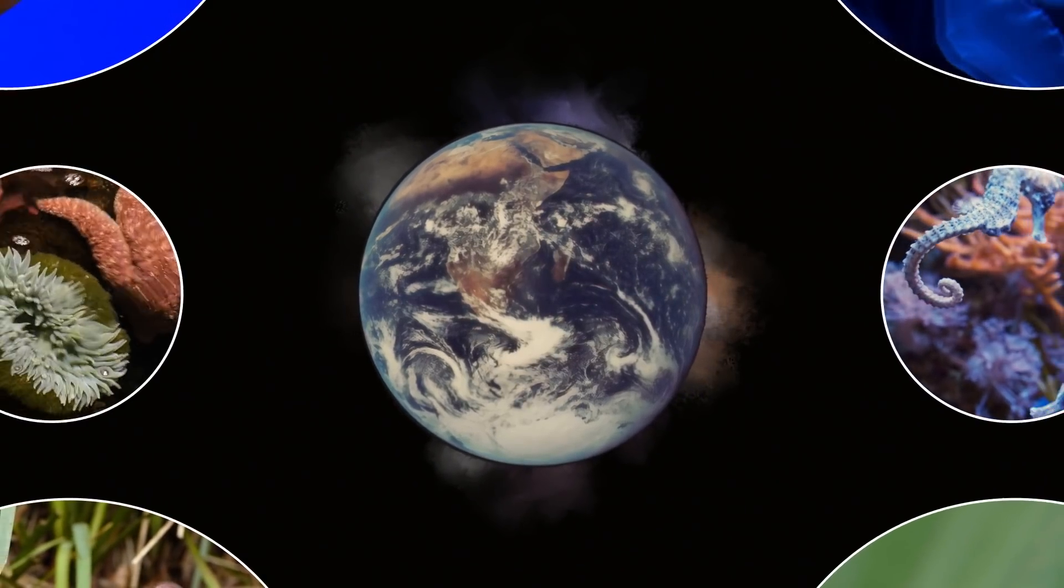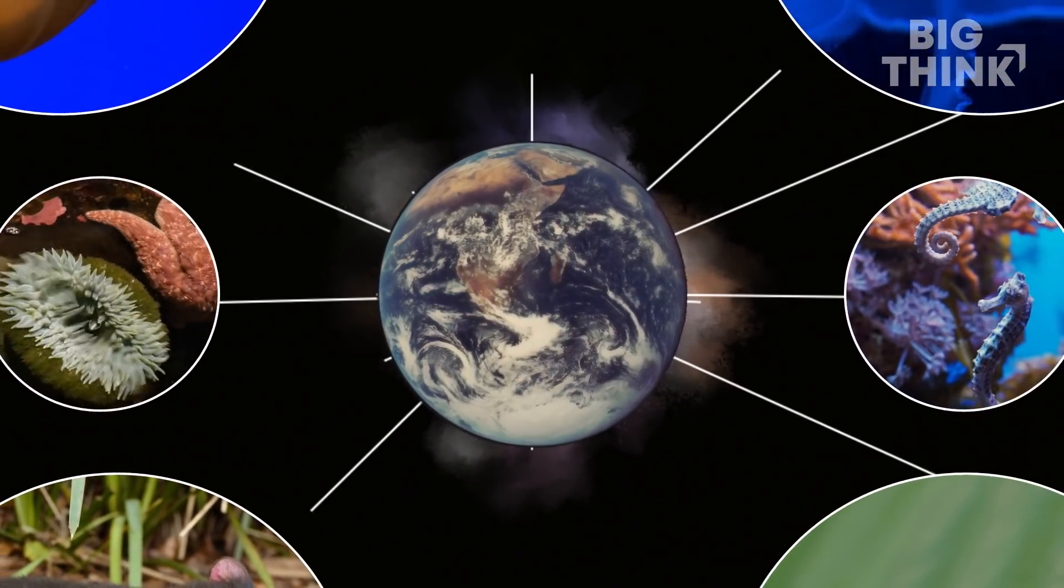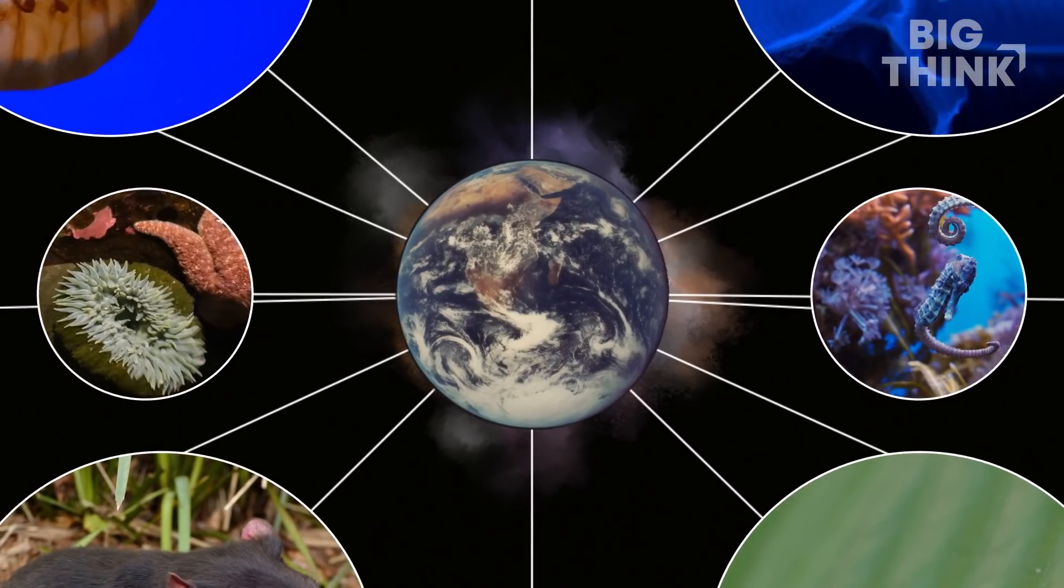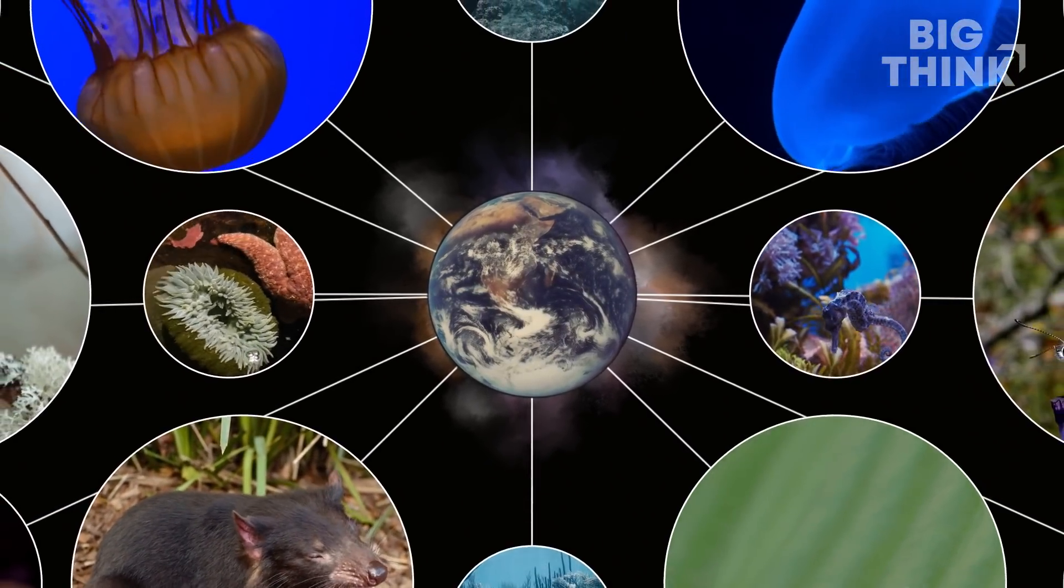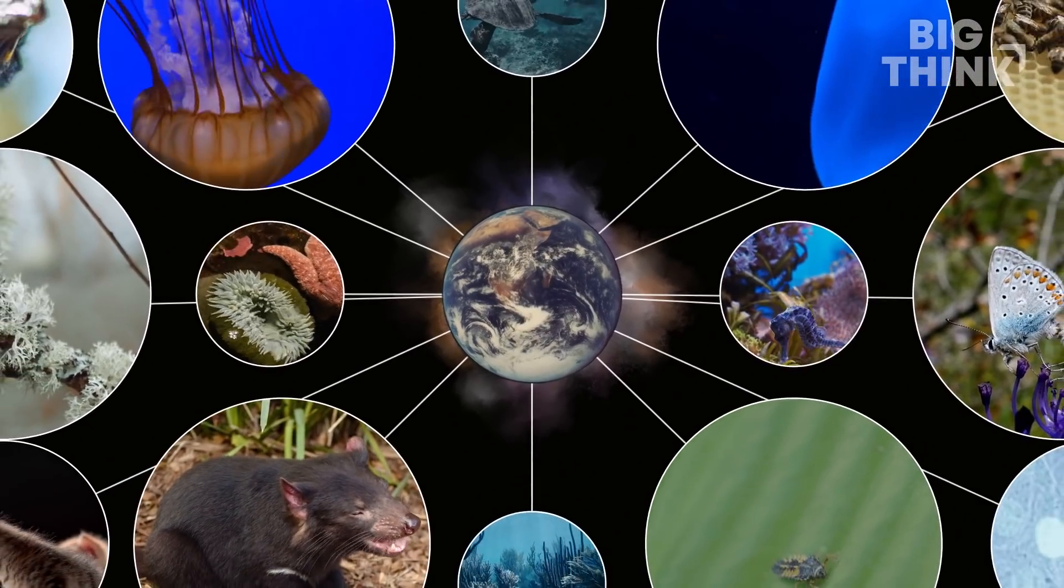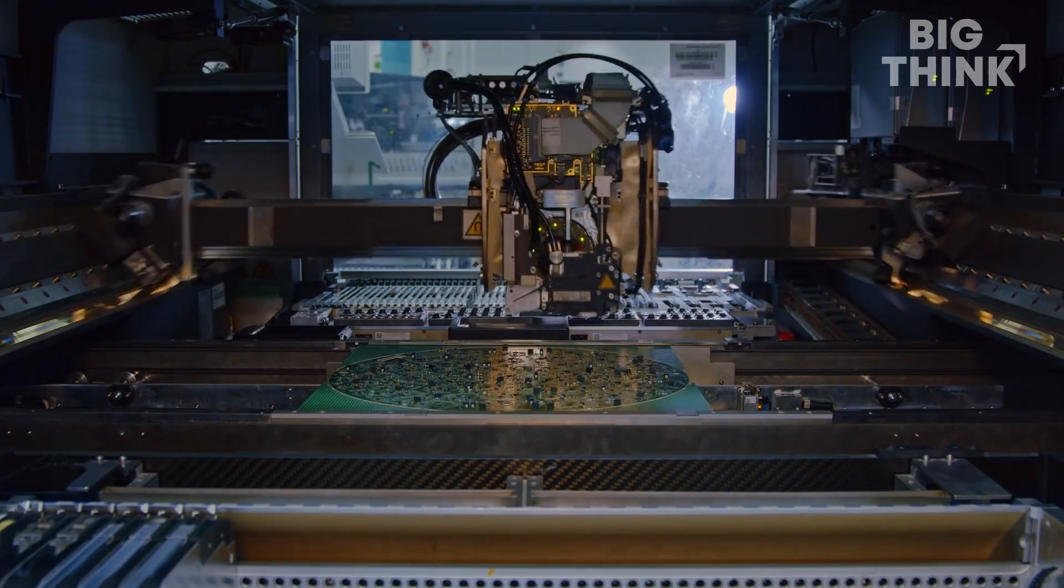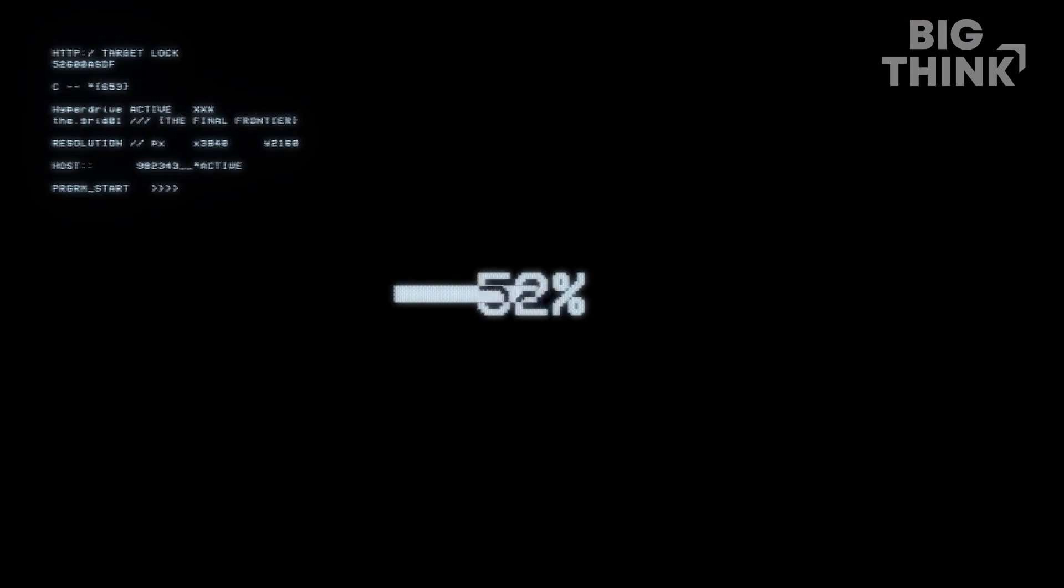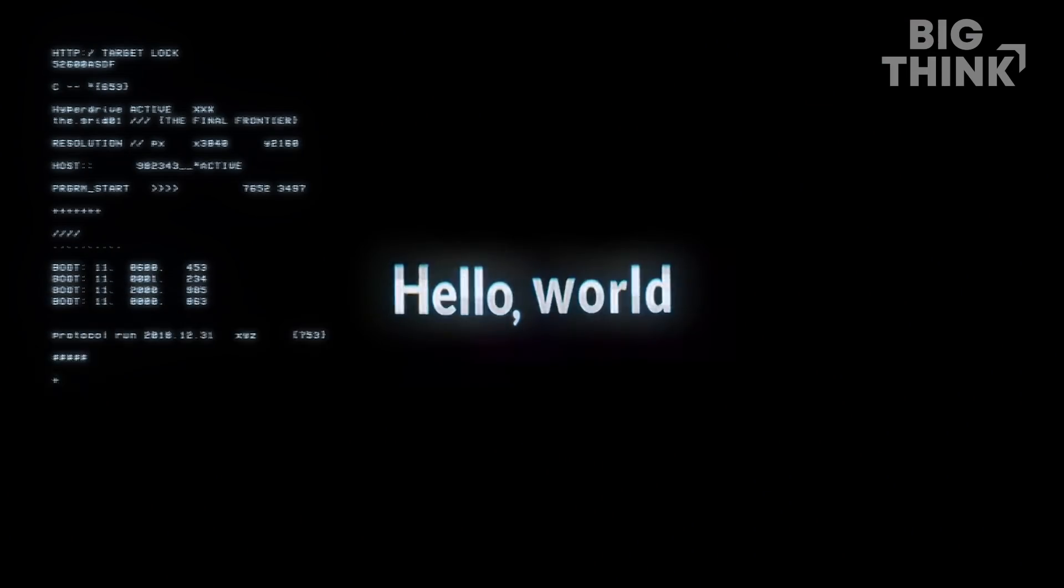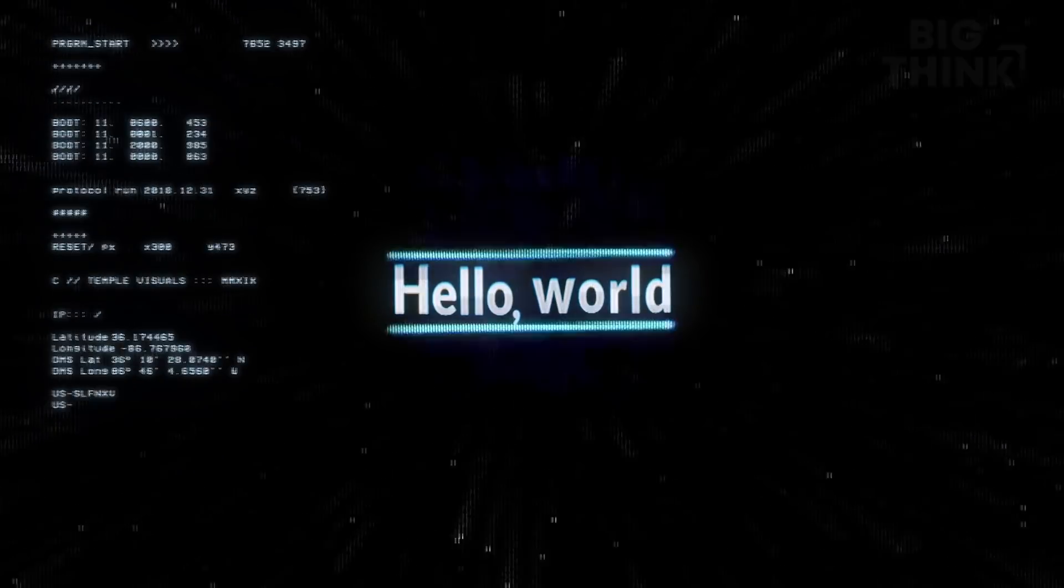Most of the hazy definitions of life as we know it are flawed because they're built around a very small sample set of one, the one living biosphere that we've evolved within. So anything that our technology creates or we create or subsequent generations will create will be a part of our life or an example of our biosphere.